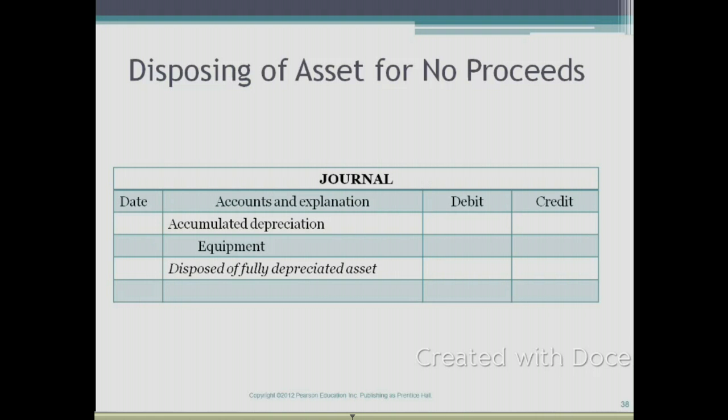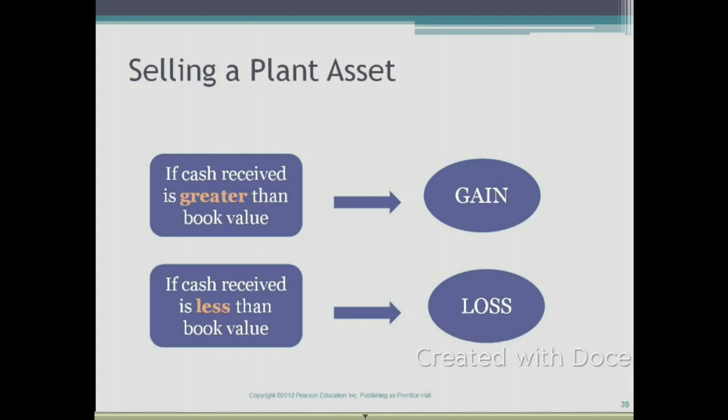A lot of times companies don't trash their assets — they will end up selling an asset. When you sell an asset, you receive cash in exchange for that asset. If you receive cash, you need to figure out whether you have a gain or a loss from the sale of that asset. To determine this, you compare the cash you received against the book value on the date of sale. If the cash received is greater than the book value, you have a gain. If less, you have a loss.